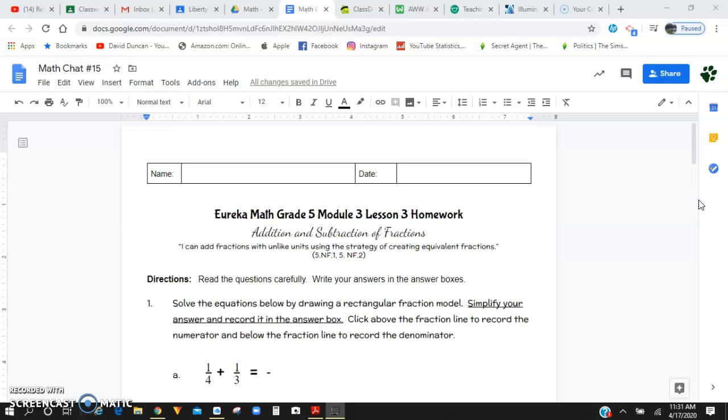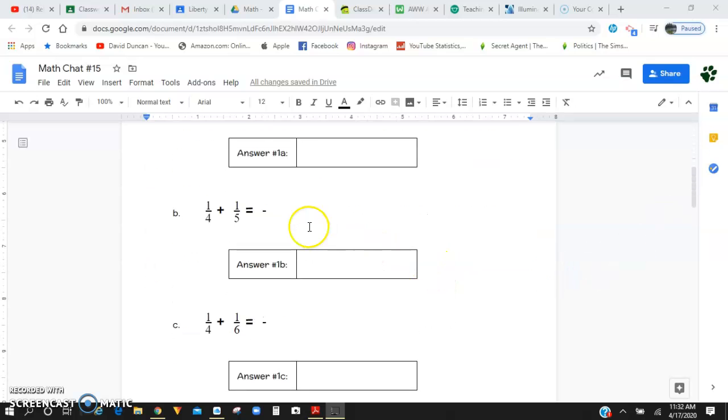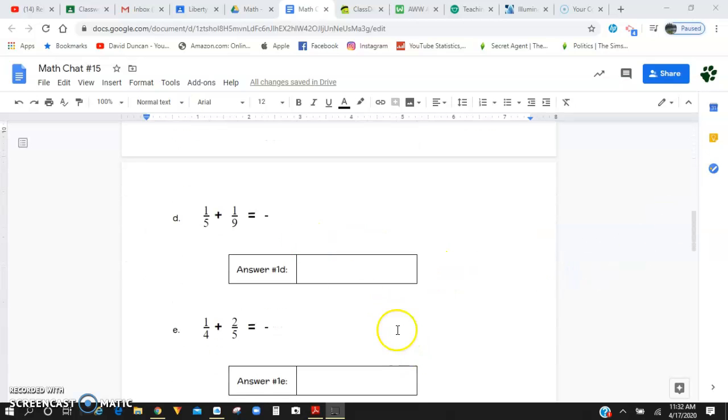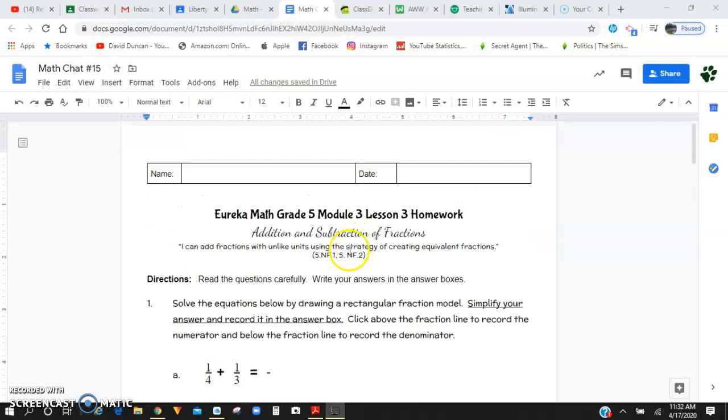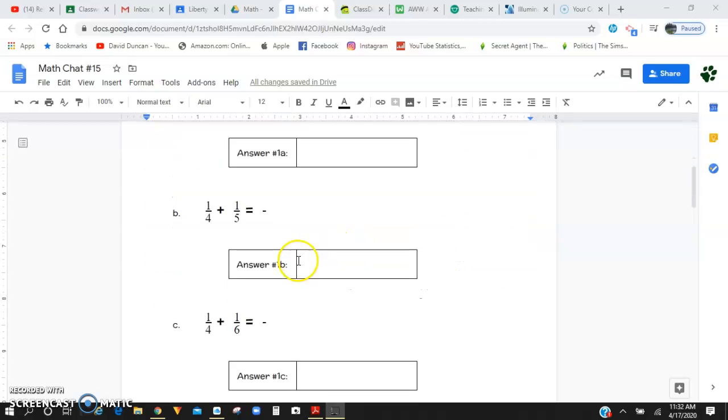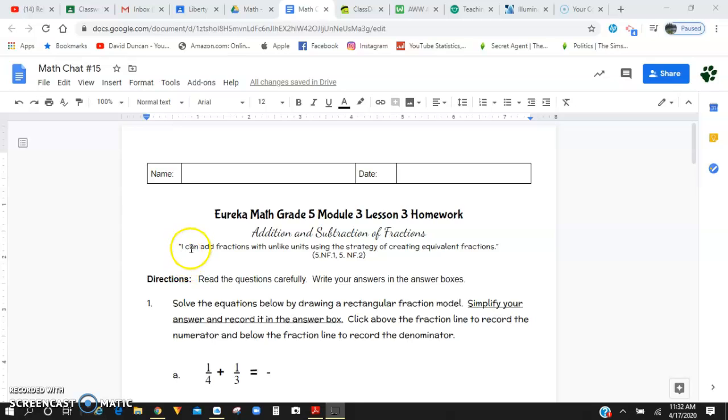So this content is adding fractions again and it is from module three. We use the butterfly method and this worksheet looks a lot like Math Chat number 14. Hopefully you guys are having luck with this. If not, let me know. But for our I Can statement today, we can add fractions with unlike units using the strategy of creating equivalent fractions.